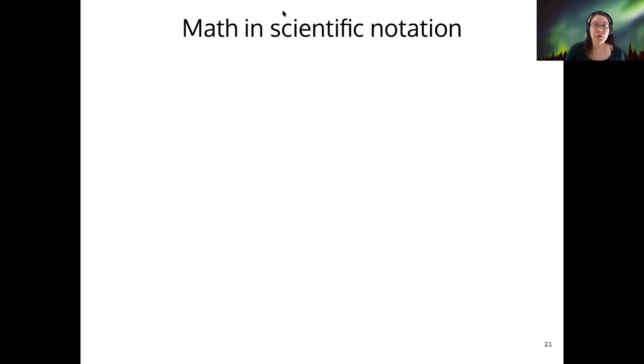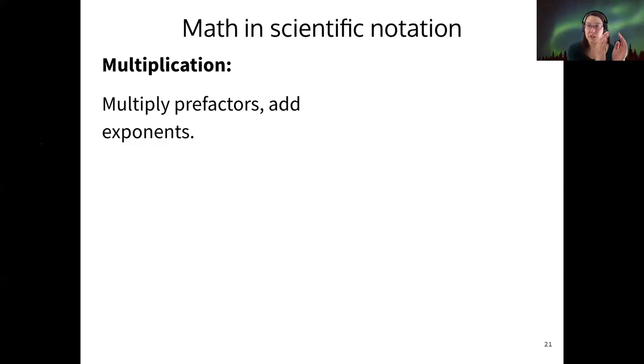Alright, so I want to go through a little bit of math rules in scientific notation. And this is where it really shines. So if we want to multiply numbers in scientific notation, we multiply just the pre-factors, just the coefficients, and then we add the exponents. So here's an example. If I have 3 times 10 to the 5 times 2 times 10 to the 9, then I get 6 times 10 to the 14.